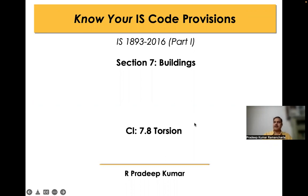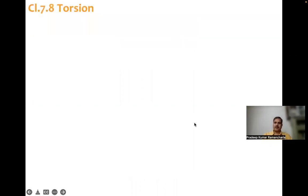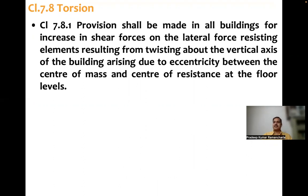Clause number 7.8 — torsion. What the code says is: provision shall be made in all buildings for increase in shear forces on the lateral force resisting elements resulting from twisting about the vertical axis of the building, arising due to eccentricity between center of mass and center of resistance at the floor levels.